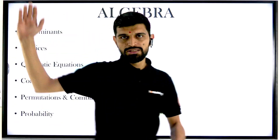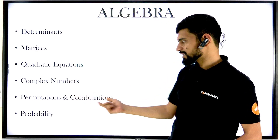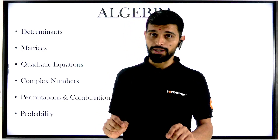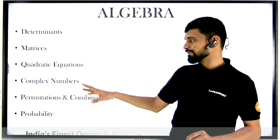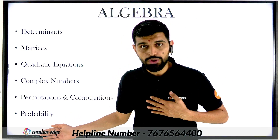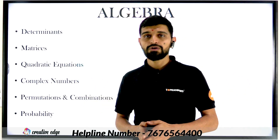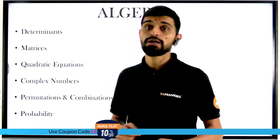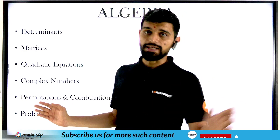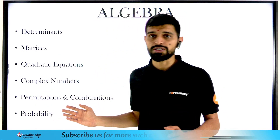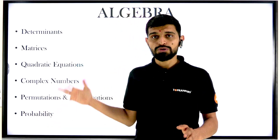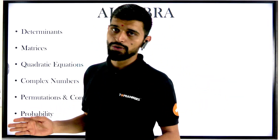In algebra, we are talking about these headings: determinants, matrices, quadratic equations, complex numbers, permutation, combination, and probability. This is one of the easiest segments to prepare. If you are comfortable with determinants, matrices, and quadratic equations, you can easily prepare permutation, combination, and probability as well. Complex numbers do have many variations and variety of questions and challenges. But in terms of weightage in the paper, it is 6 to 7 questions, with a minimum weightage of 5 questions. So these 5 questions, about 10 to 15 questions overall, we have discussed now.